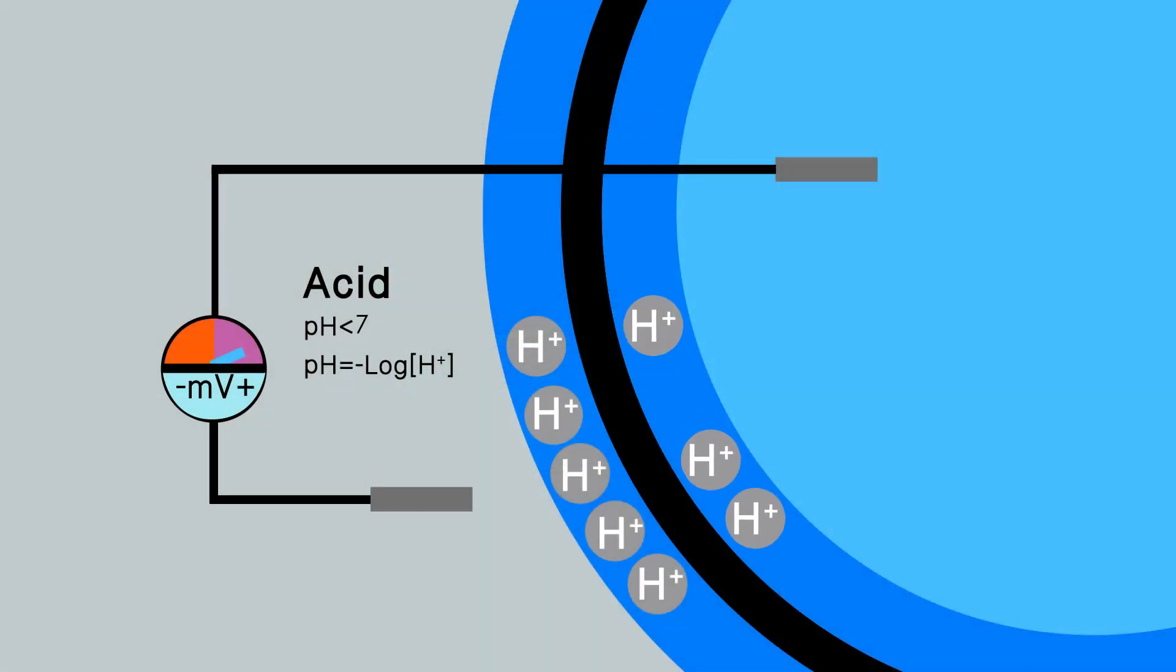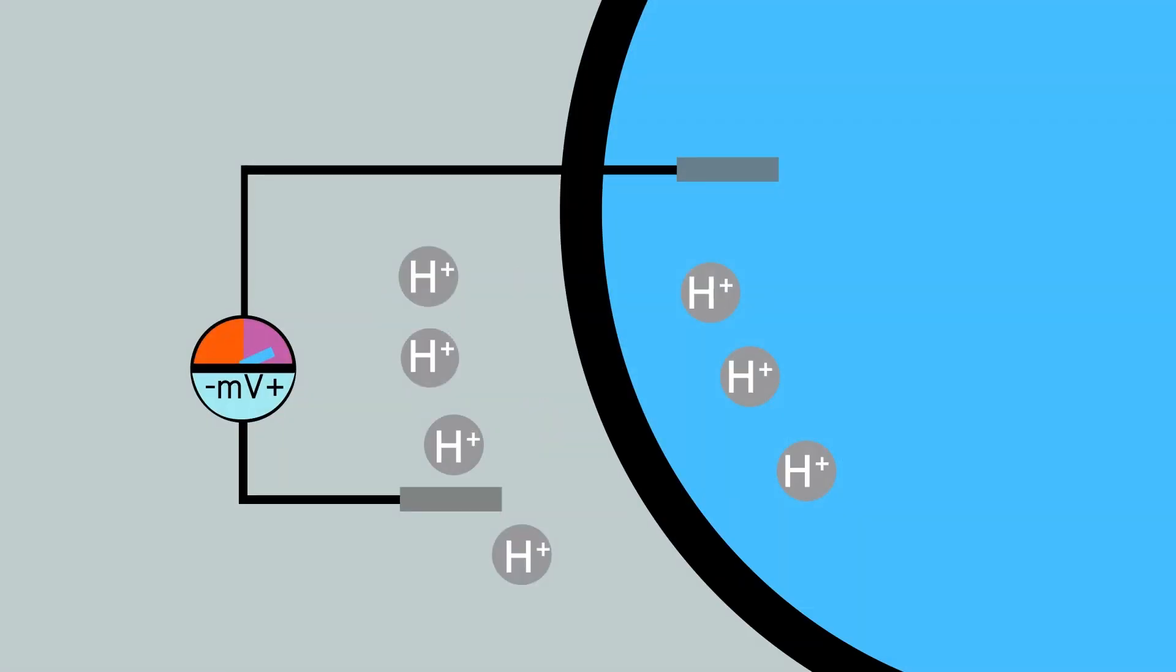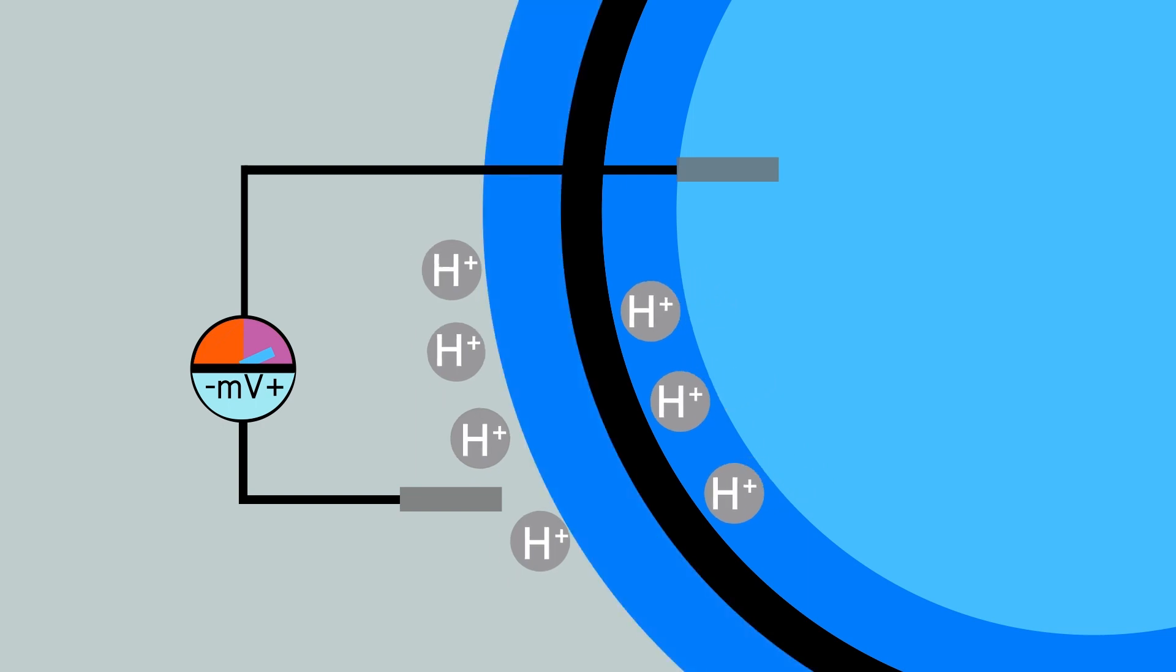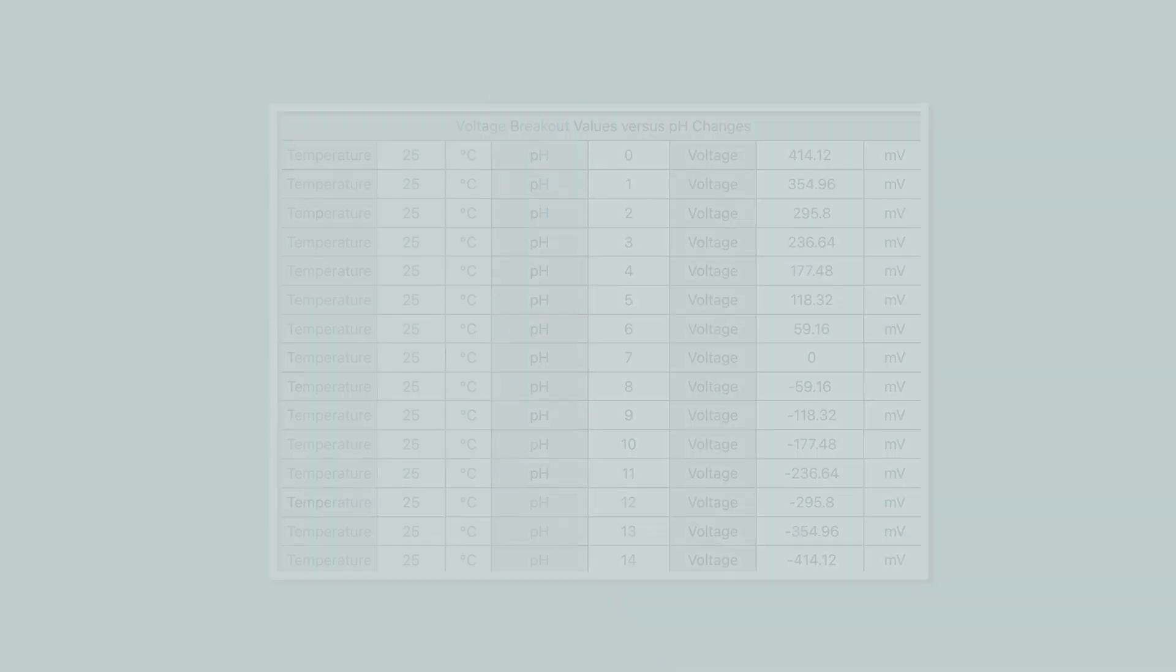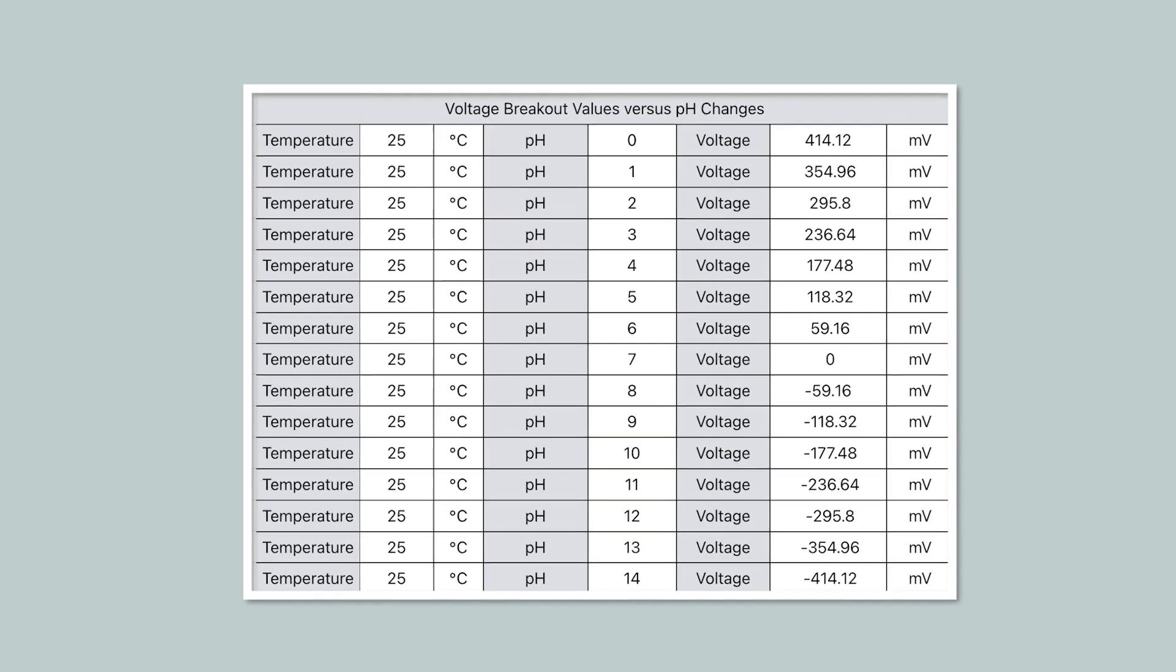The last video explained how a pH meter converts the concentration of hydrogen ions to the voltage signal and outputs it to devices like main controllers through amplifier. The sensed concentration change is the potential change on the outer glass electrode. There is a linear relationship between millivolt signals and pH values.